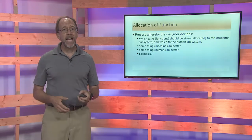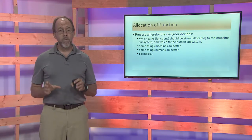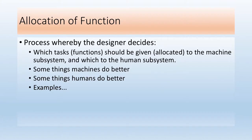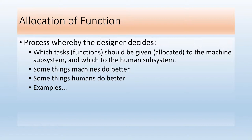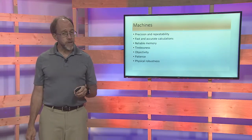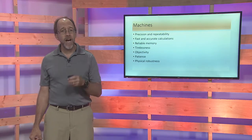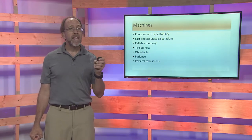Now let's look at allocation of function. As a designer, you have to make decisions about man-and-machine systems — what tasks go to the machine, what tasks go to the human, and how do you put the interface in there. Machines are good at a lot of things, and humans are good at a lot of things too, and many of those strengths differ, which really does help in the design.